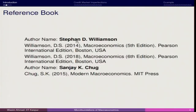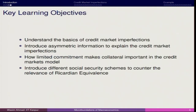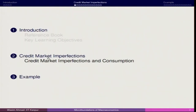Keeping these things in mind, we can think about how to improve our understanding of the model. The reference book remains the same — credit market asymmetry as in Stephen D. Williamson, and I request you to refer to the Williamson book. The basics covered here are: introducing asymmetric information to explain credit market imperfections, how limited commitment makes collateral important in credit markets, and introducing different social security schemes to counter the relevance of Ricardian equivalence.